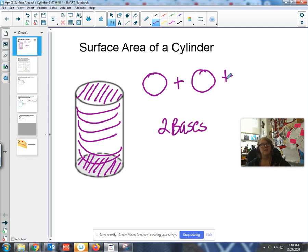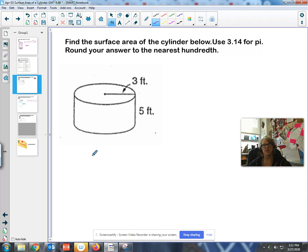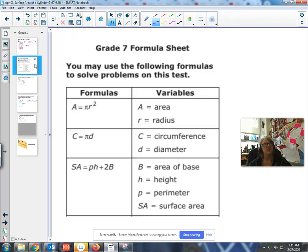We've got this basically like the label off of a can and it ends up being a perfect rectangle where this is the height. And then this edge is once around the circle or the circumference, and circumference here is really the same as pi times diameter.